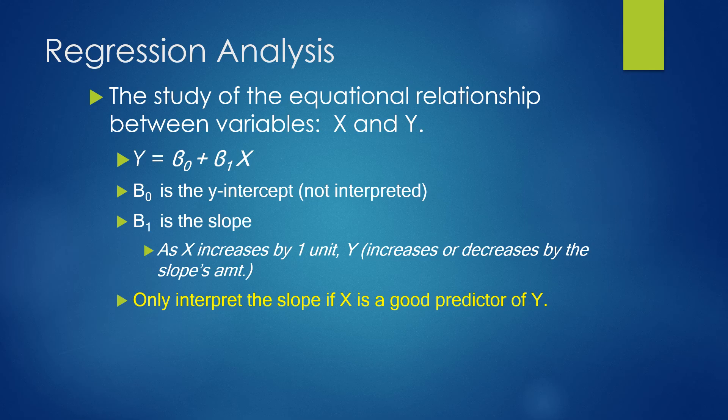If we interpret our equation for the slope, it would be as x increases by one unit, y is going to increase if it's positive or decrease if it's negative by the slope amount. We'll only interpret the slope if x is a good predictor of y.